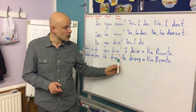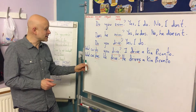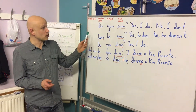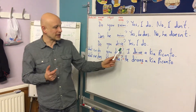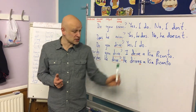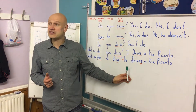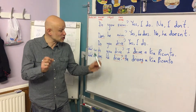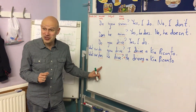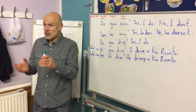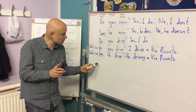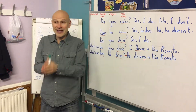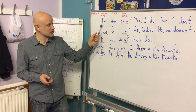We didn't do negatives today, but negative sentences also use the auxiliary verb 'do.' For example: 'I don't drive a Kia Picanto' or 'He doesn't drive.' Because we're using the auxiliary verb 'do' — 'I don't,' 'he doesn't' — the auxiliary verb makes the main verb present simple base form. That's true for all questions and all negatives using this structure.